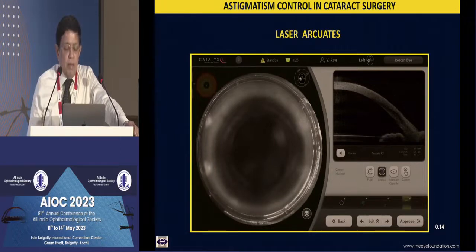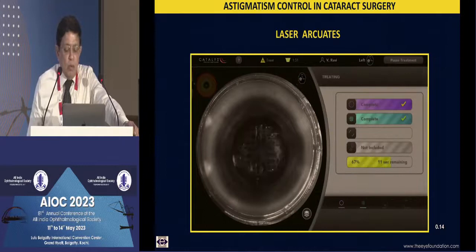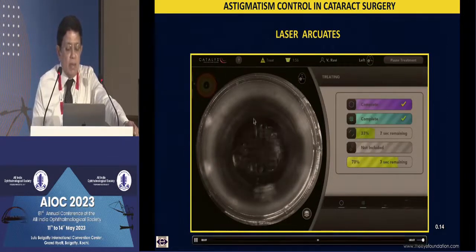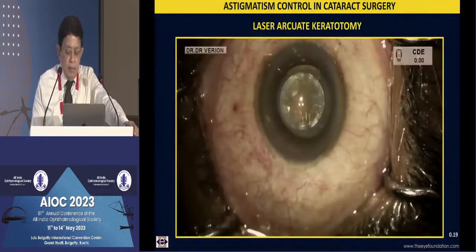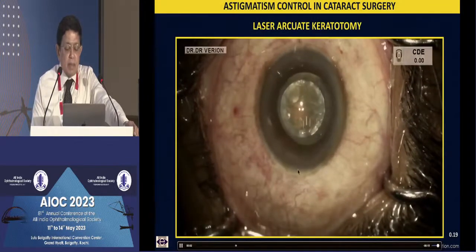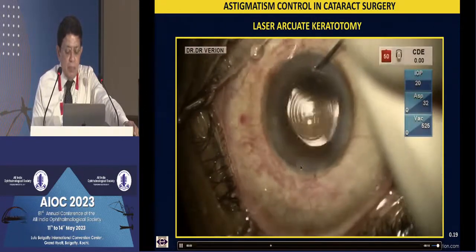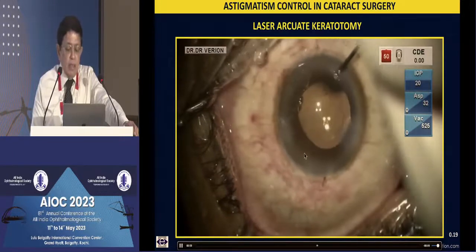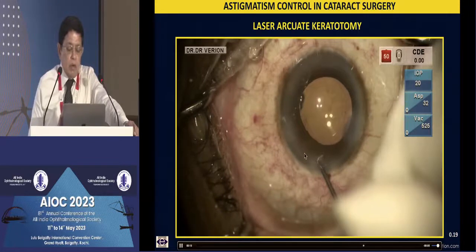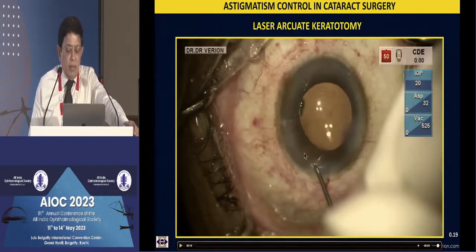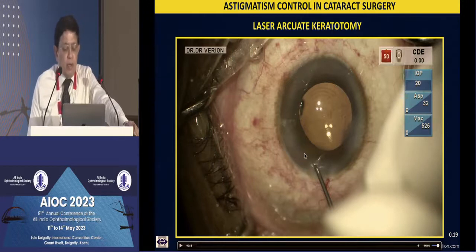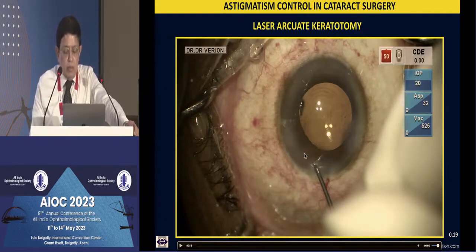Once a laser platform became available, laser arcuate keratotomy definitely has a role to play. These two incisions are created after nucleus emulsification and rhexis. Even for against-the-rule astigmatism with a temporal clear corneal incision, I place these incisions at 8 millimeters. You always have to open up these incisions — intrastromal incisions cause less irritation but are not effective unless opened. For a patient with about 0.6 diopters of astigmatism where a toric IOL is not indicated, I use laser arcuate keratotomy.